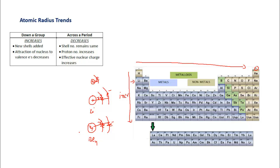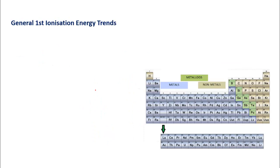Why does size decrease along the period? Because the nuclear charge increases — lithium has 3 protons and beryllium has 4 protons. The number of shells remains the same but the nuclear charge increases, so the attraction is stronger and the size decreases. As you move across a period, the number of shells remains the same but the proton number (nuclear charge) increases, so atomic size decreases.